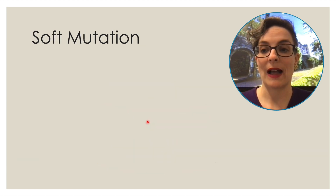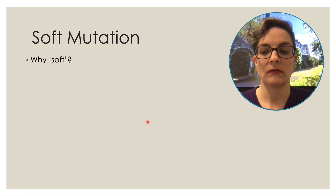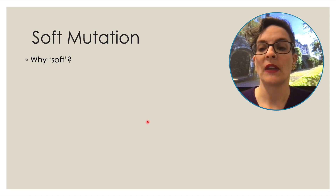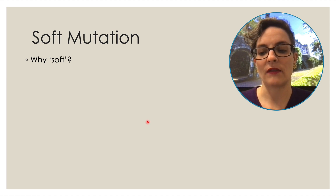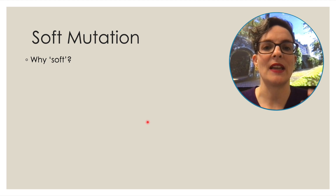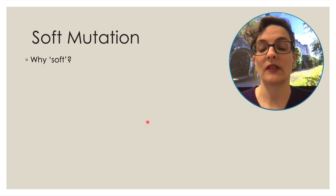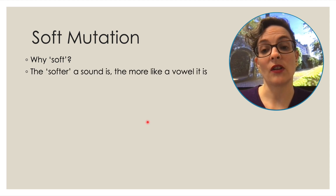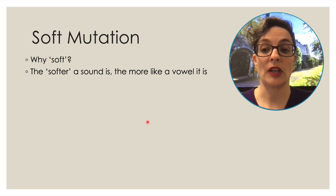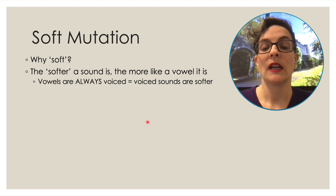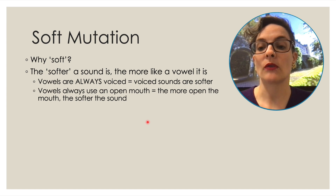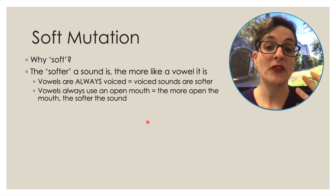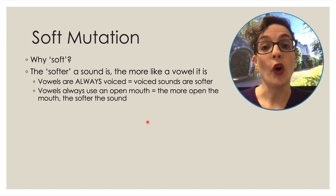Now we come to soft mutation, and first of all — why is it called soft mutation? Nasal mutation makes sense because it changes from a stop to a nasal sound. Aspirate mutation makes sense because they're all voiceless letters changing from a stop to a breathy fricative — aspirate, like aspiration, breathing. 'Soft' doesn't really make sense until we know something else about describing sounds. We describe sounds as soft the more like a vowel they are. Vowels are the softest sounds — always voiced, always with an open mouth. So the more voiced a sound is and the more open it is, the softer it is.